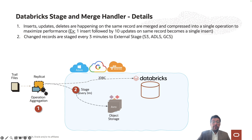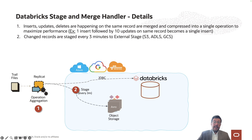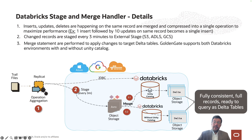GoldenGate provides additional settings to change the default three-minute batch window to higher or lower values. If you want better performance and higher throughput, you can set it to a higher value. If you need lower latencies, you can configure it to a lower value. At the last step, GoldenGate writes the data into target delta tables using merge SQL from Databricks engines.